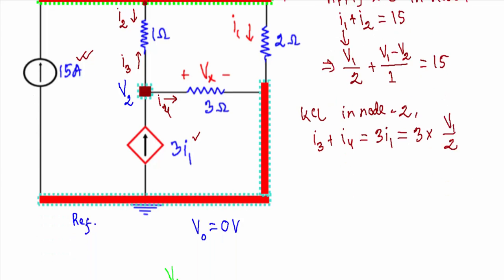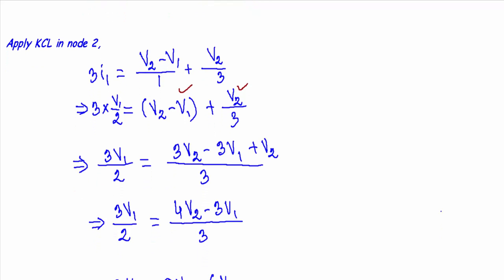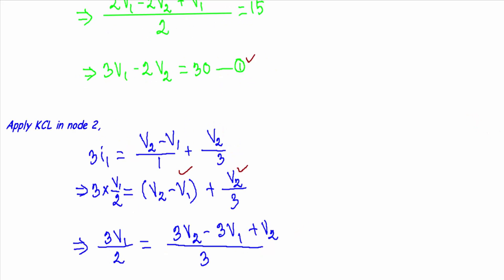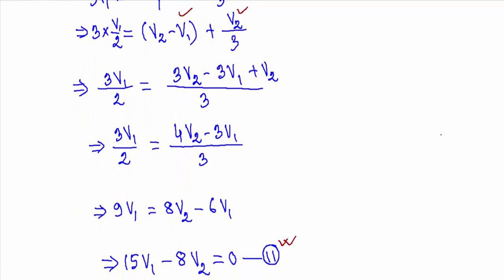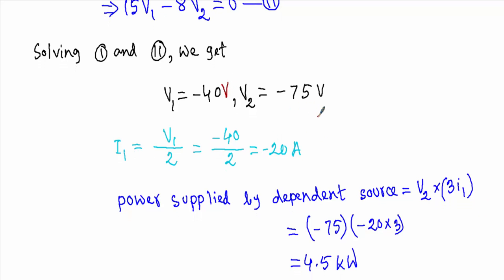Since I1 equals V1/2, we have 3·I1 equals 3V1/2. KCL at node 2: 3·I1 equals (V2 minus V1)/1 plus V2/3. Taking LCM: 3V1/2 equals (3V2 minus 3V1 plus V2)/3. Cross-multiplying and simplifying gives 15V1 minus 8V2 equals 0, which is equation number 2. Solving equations 1 and 2 simultaneously gives V1 equals 40 volts and V2 equals 75 volts.